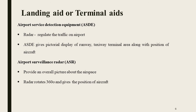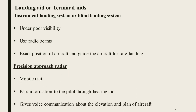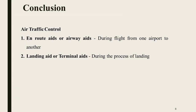The Airport Surveillance Radar provides overall airspace coverage, rotating 360 degrees to determine aircraft azimuth and position. Approach lights assist with poor visibility conditions. Radio beams are used to determine the exact position of the aircraft, enabling safe self-landing. In summary, ATC aids are classified as enroute aids or airway aids, and landing aids or terminal aids.